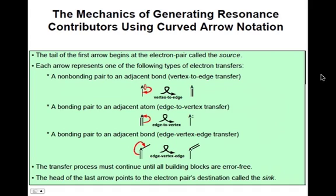And this transfer process must continue until all of the building blocks are error-free, just as we saw in our nitromethane example. We had to keep moving our arrows to draw a valid Lewis structure. And the head of this last arrow will always point to the electron pair destination, which is known as the electron sink. This is where our electrons will end. And this sink is normally a place that is electron deficient. Sometimes this will be a positive charge. Sometimes this will be an incomplete octet. But it is normally a place that does not have many electrons around it.